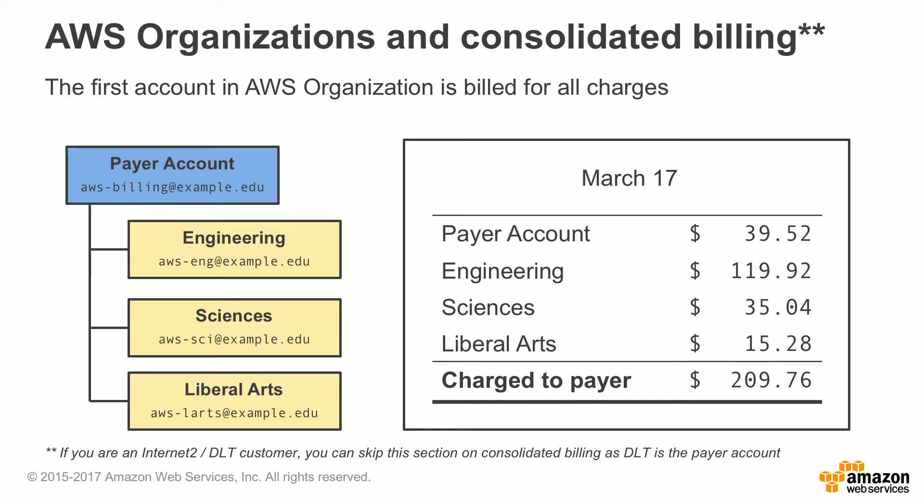The first account in your AWS organization is billed for all charges. However, when you get your bill you'll be able to see what each other account in your organization's actual charges were as well. Just a note that if you're an Internet2/DLT customer, you can skip this section on Consolidated Billing as DLT is going to be your payer account.